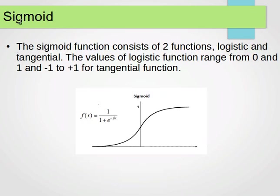Another one is the sigmoid, which is quite popular. Sigmoid function consists of, as you see that, that's the function, f of x equals 1 over 1 plus e to the power minus beta x. It consists of two functions.